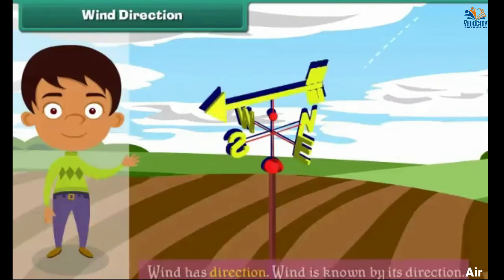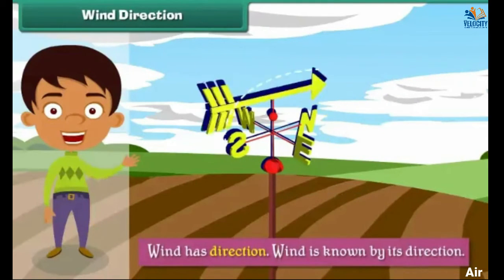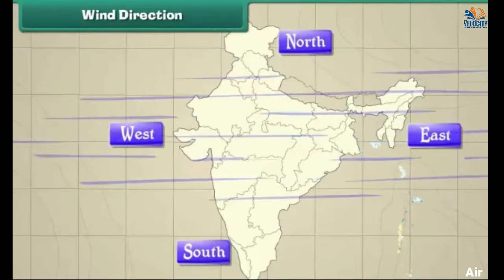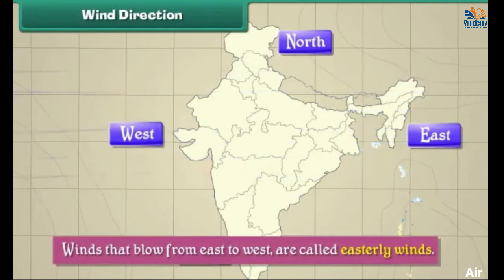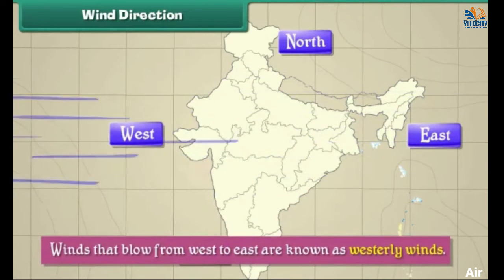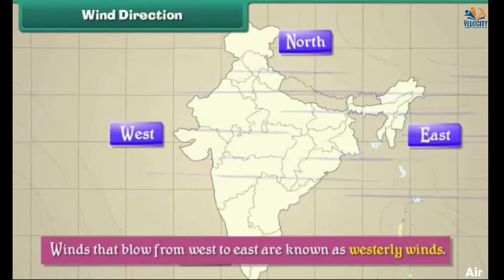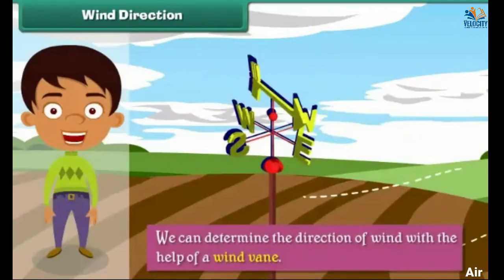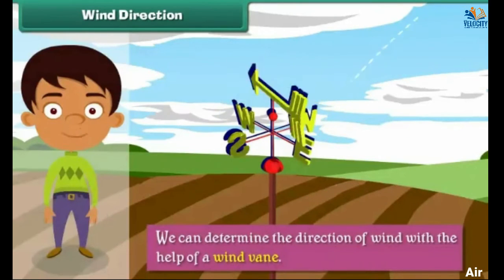Wind Direction: Wind has direction and is known by the direction it blows from. For example, winds which blow from east to west are called easterly winds, and winds that blow from west to east are known as westerly winds. We can determine the direction of wind with the help of a wind vane, whose arrow indicates the direction from which the wind is blowing.